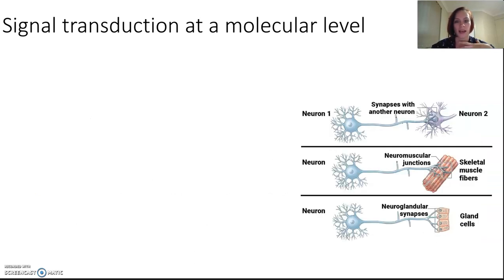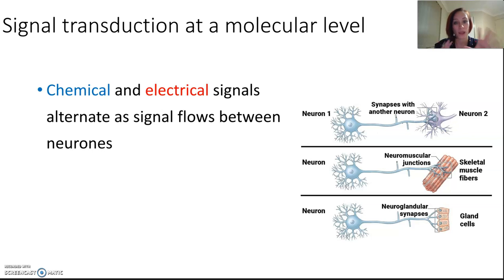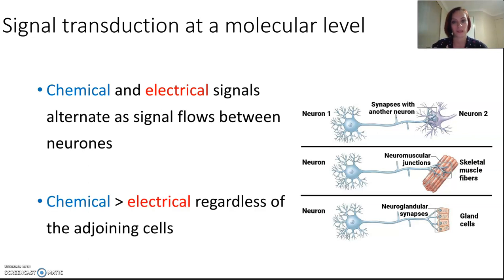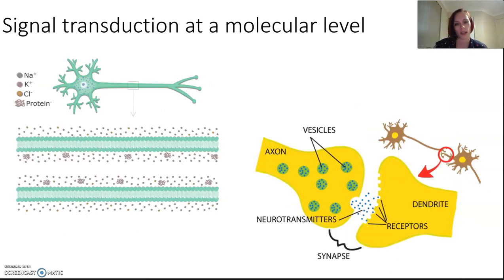Signal transduction happens with both chemical and electrical signals and they alternate as they flow between neurons. The neuron will send an electrical signal and then it will be translated into a chemical signal to assist with the next adjoining cell. The next adjoining cell might be a neuron or it might also be a muscle.